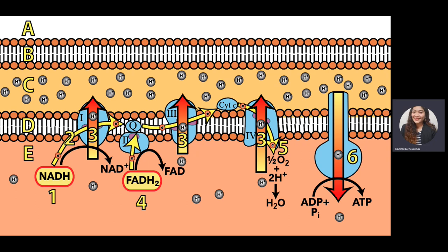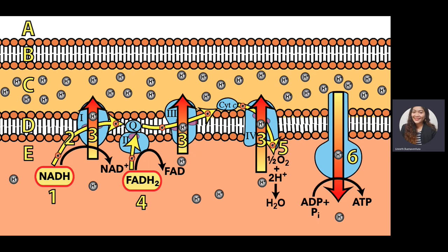Once there is a higher positive charge in the intermembrane space and less positive charge in the mitochondrial matrix, the ATP synthase becomes active and the process of chemiosmosis occurs. ATP synthase works like a rotor — with higher concentration of protons in the intermembrane space, it phosphorylates ADP by adding a phosphate to produce adenosine triphosphate.